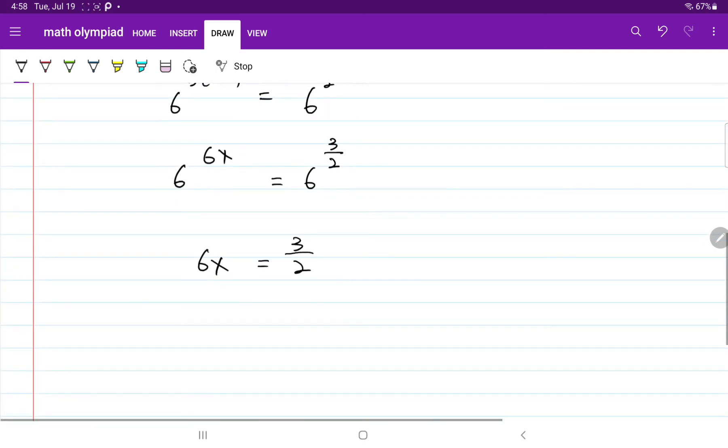And when we do a cross multiplication, I have 12x is equal to 3, x is equal to 1 over 4.